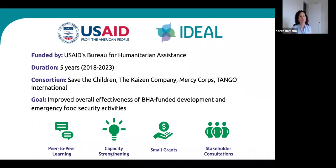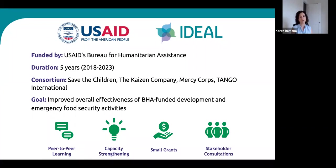The four modalities are: peer-to-peer learning facilitated through knowledge sharing meetings, communities of practice, and topic-specific learning events—an example being our COVID-19 learning series; capacity strengthening through tools and approaches on themes such as theory of change and monitoring and evaluation; the Small Grants Program, which provides funds to test new ideas and generate learning for the wider food security community; and stakeholder consultations creating structured opportunities for implementers and BHA to directly engage on critical food security programming issues. Ideal uniquely focuses on cross-activity and cross-regional learning rather than strengthening just individual food security programs.